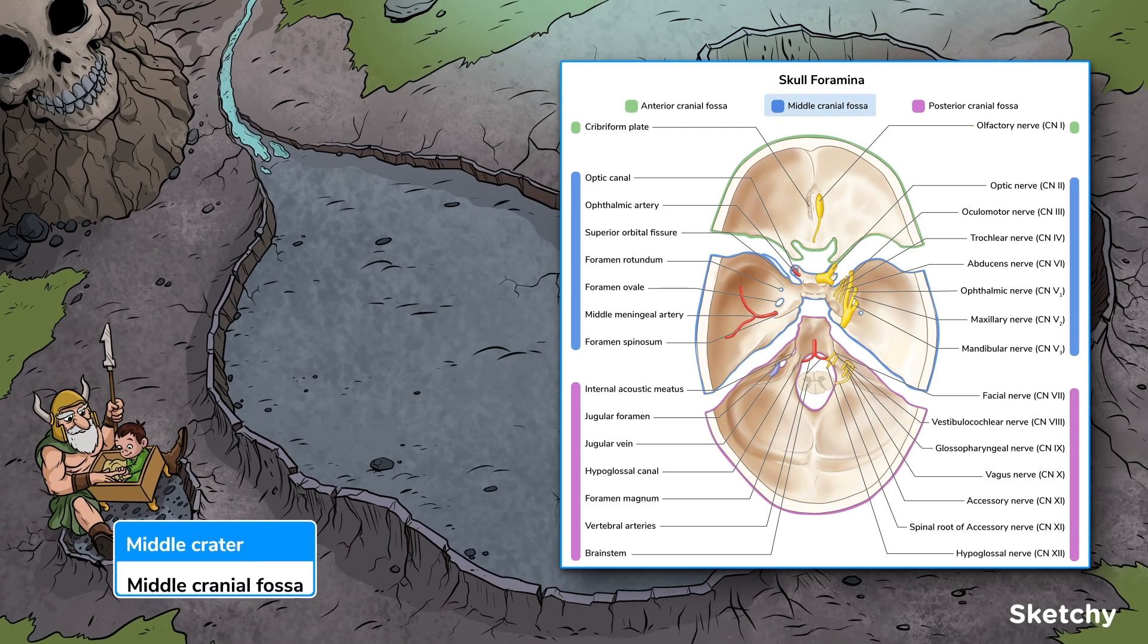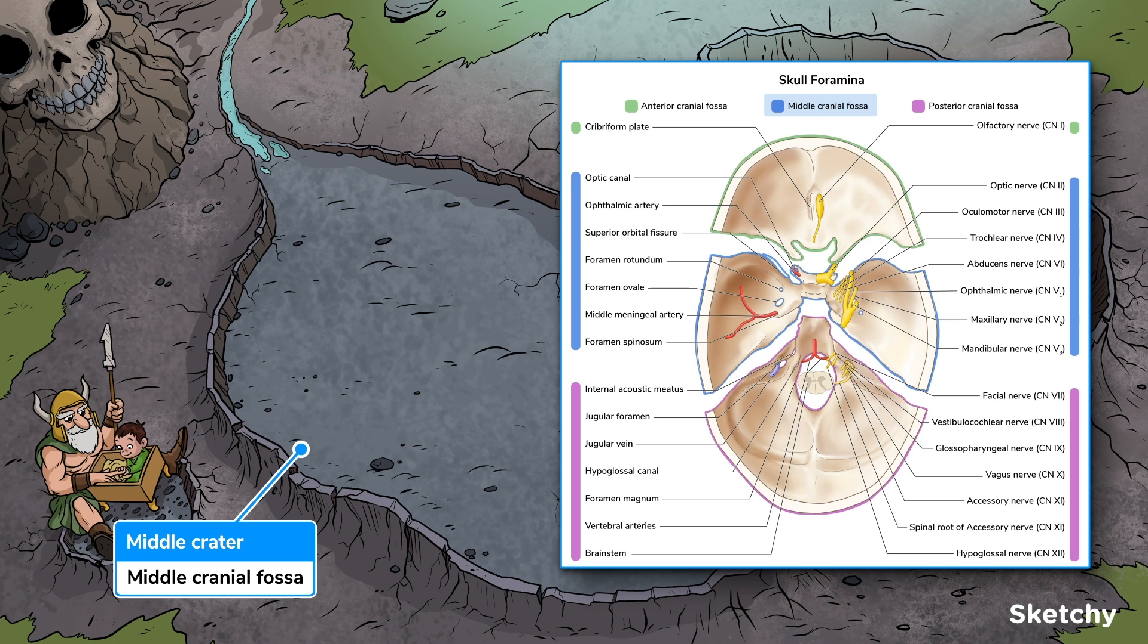Next is the middle cranial fossa. This will be the middle crater. The middle fossa houses the pituitary gland and temporal lobes of the brain. It's composed of the sphenoid and temporal bones.